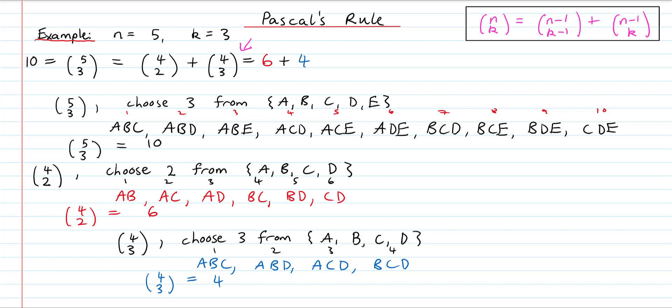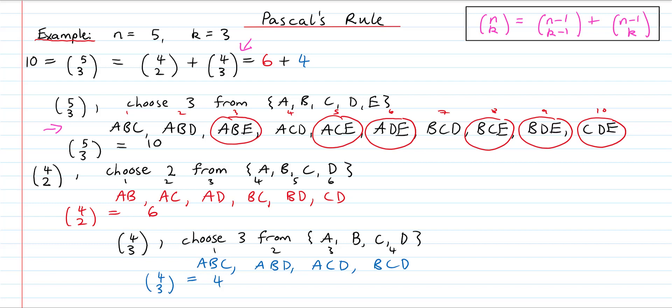Now let's look more closely at why this works — which is why we listed everything out. Looking at our list of all groups of 3 chosen from 5 elements, we first circle all the groups that contain E: ABE, ACE, ADE, BCE, BDE, and CDE — giving 6 groups. Then we circle the groups that don't contain E: ABC, ABD, ACD, and BCD — giving 4 groups. So we have 6 groups containing E and 4 that don't.